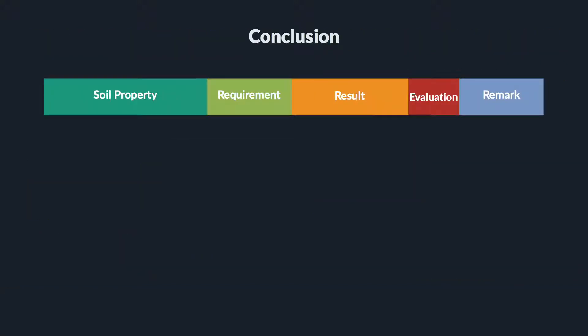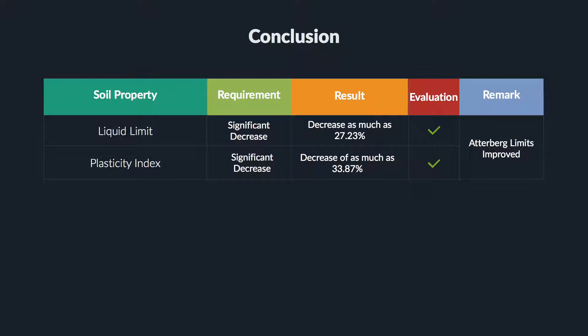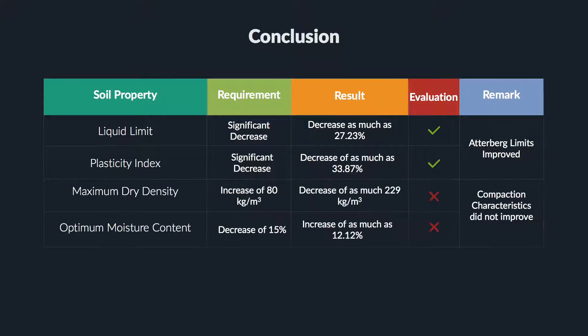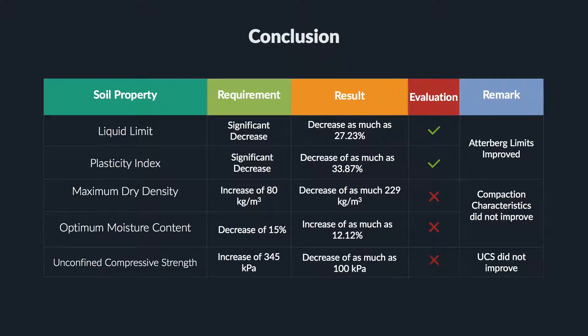From the conducted study, the addition of RHA to expansive soil yielded the following conclusions. A significant decrease in the soil's liquid limit and plasticity index indicates an improvement in the Atterberg limits. A decrease in the soil's maximum dry density and an increase in the soil's optimum moisture content means that RHA is ineffective in improving the soil's moisture-density relationship. A decrease in the soil's unconfined compressive strength proves that RHA lacks strength development characteristics.